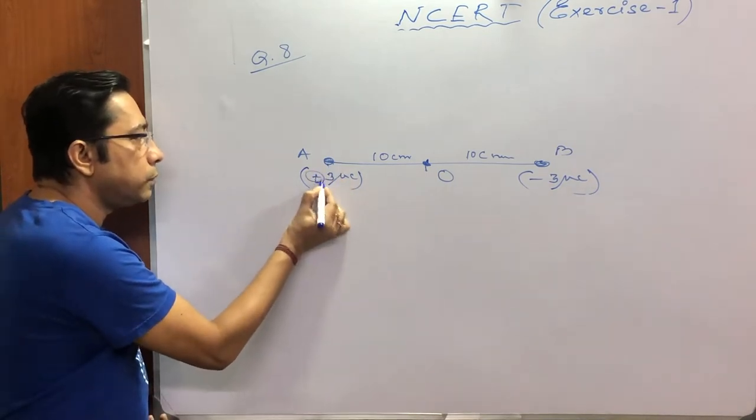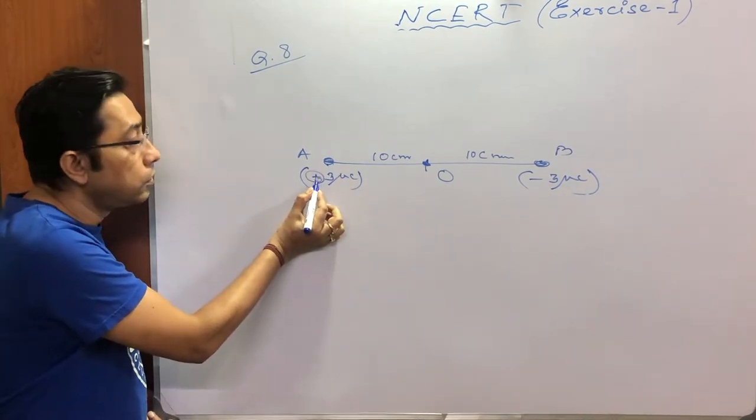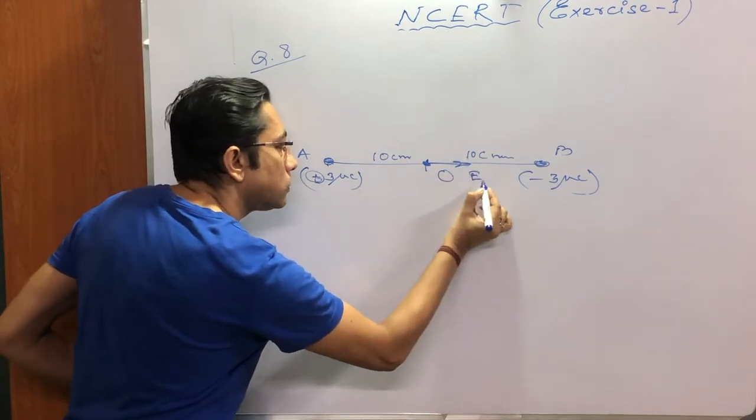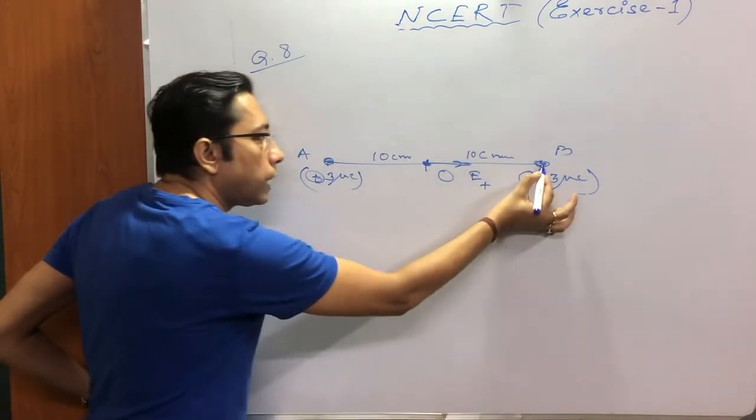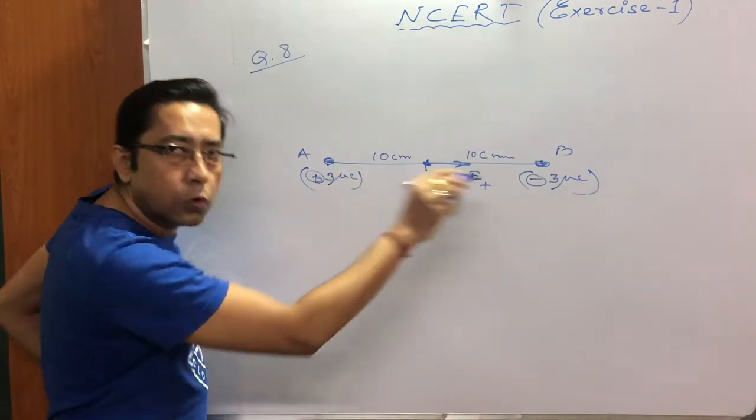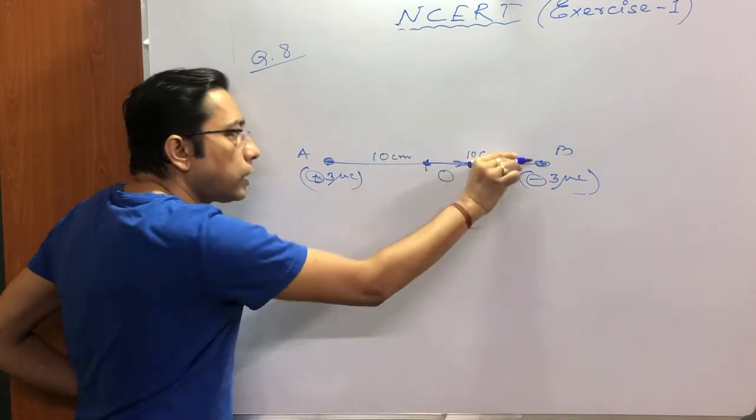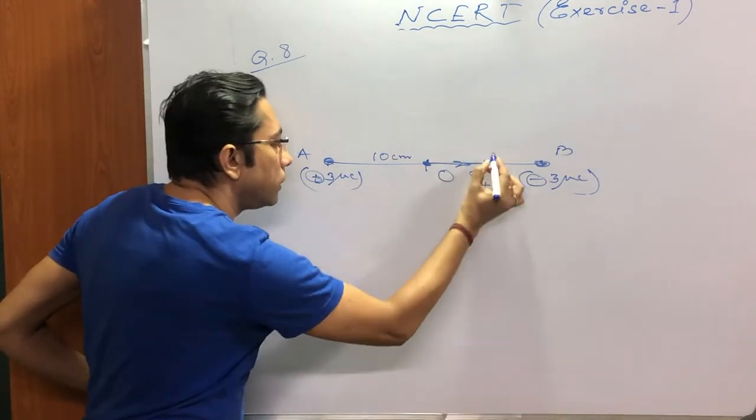First look at the sign. For positive charges, electric field is away from it, so let us call it E plus. This is negative. For negative charge, electric field is towards that charge, so for negative charge electric field is in this direction again, let us call it E minus.